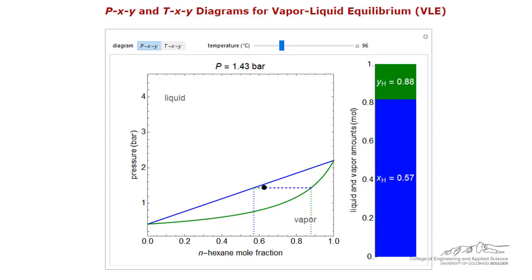As the pressure is further reduced, the mixture is in the two-phase region. The bar on the right side is now divided into blue and green sections, with the height of each bar corresponding to the relative amount of material in the liquid and vapor phases.